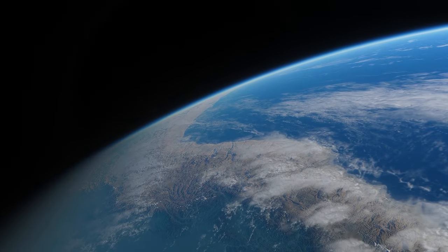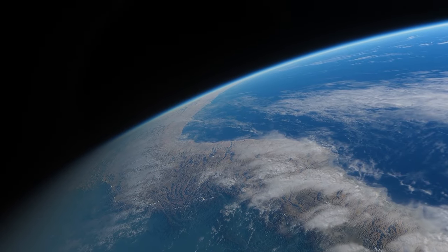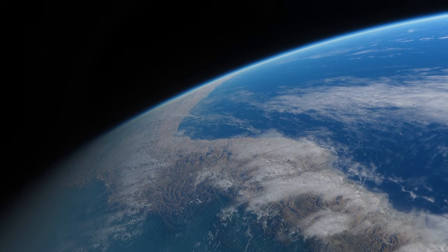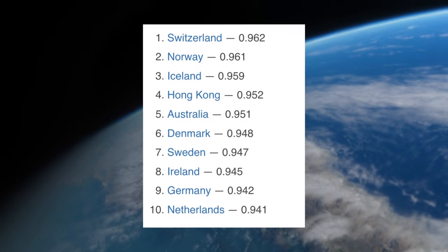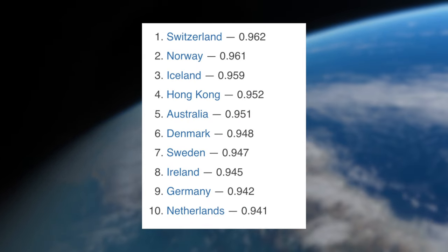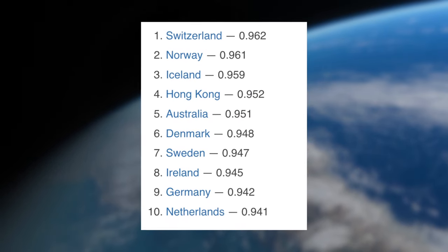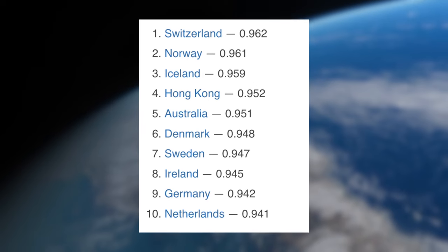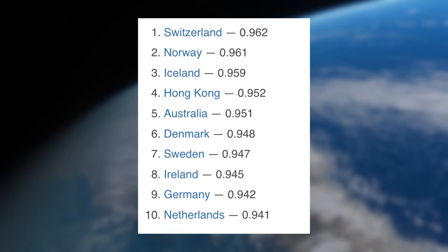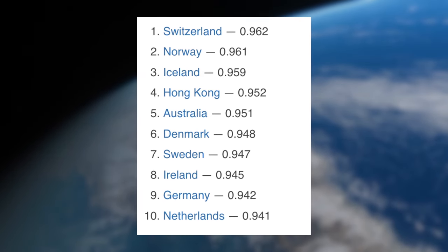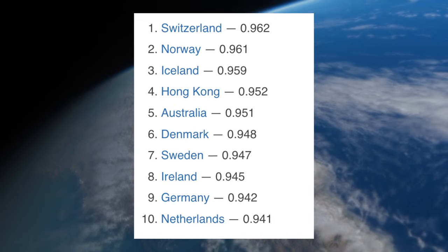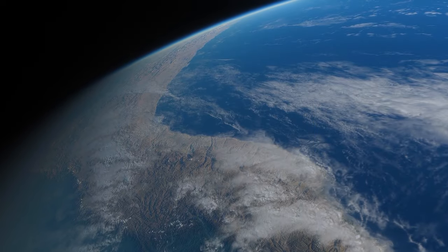On the opposite end of the spectrum, the 10 most developed countries are Switzerland, Norway, Iceland, Hong Kong — which is a special administrative region of China — Australia, Denmark, Sweden, Ireland, Germany and the Netherlands.